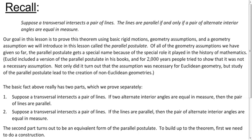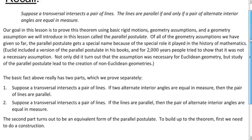We've already learned that when a transversal intersects a pair of lines, the lines are parallel if and only if the alternate interior angles are congruent. We want to prove this using our basic rigid motions and geometry assumptions. This is really important historically in mathematics. Part of this is equivalent to the parallel postulate, which for thousands of years people tried to prove — and it turns out it's not provable. It has to be given as a postulate, but it did give rise to other forms of geometry.